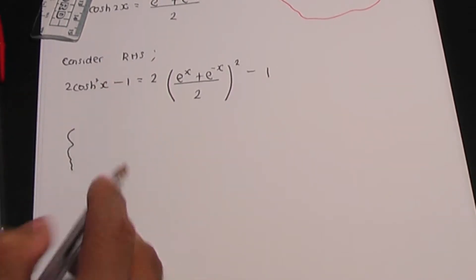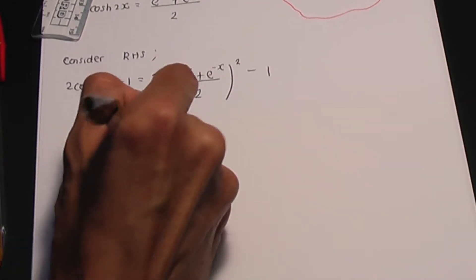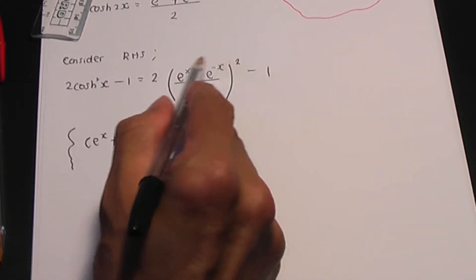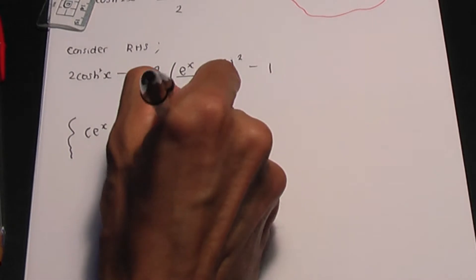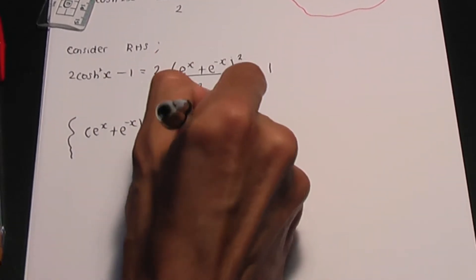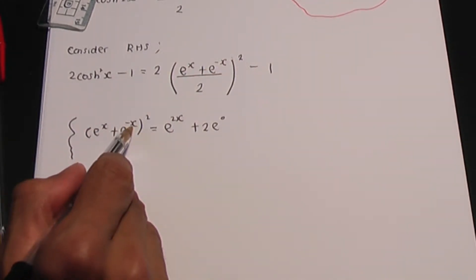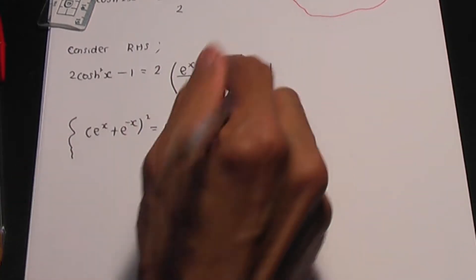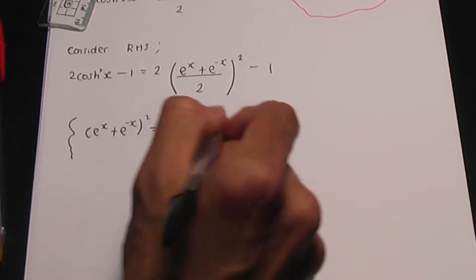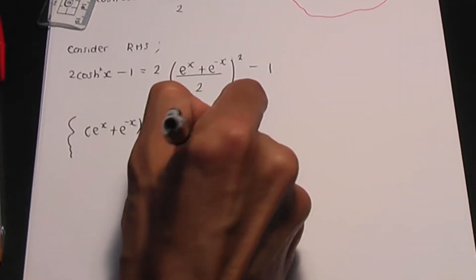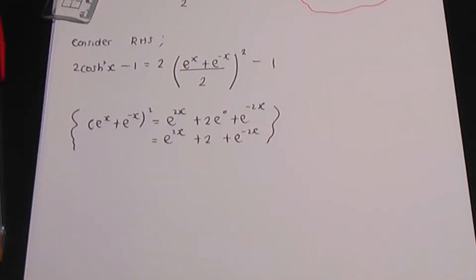Don't forget to square that, minus 1. Now let me do a side calculation and expand the bracket on top: e to the x plus e to the minus x, all squared. Be careful with your multiplication — expanding gives e to the 2x, plus 2 times e to the 0 (since e to the x times e to the minus x is e to the 0), plus e to the minus 2x. Since e to the 0 is 1, this gives e to the 2x plus 2 plus e to the minus 2x.